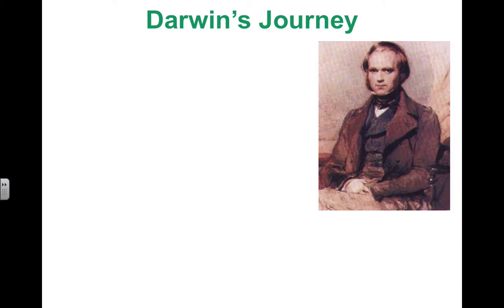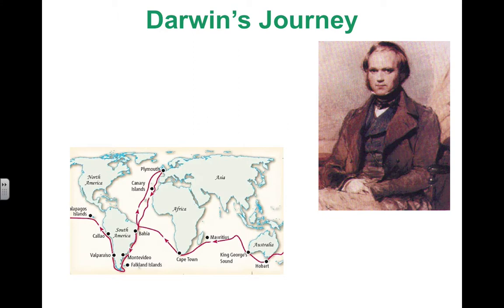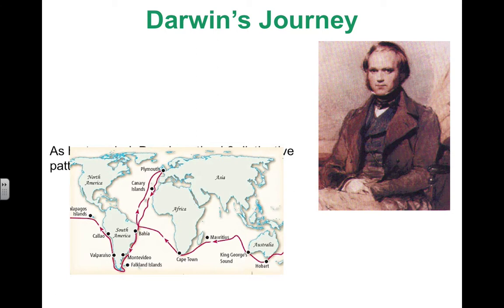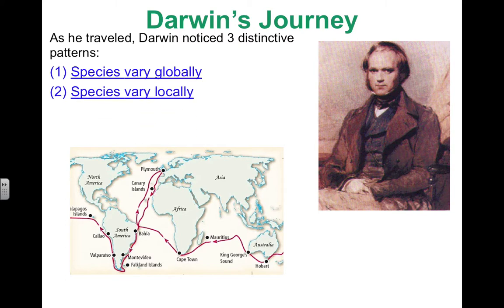One person who was interested in the differences between organisms was Charles Darwin. He traveled the world observing and collecting organisms, and even found fossils of older organisms. The map below shows his journey — he started in England, made his way south to South America, stopping by a group of islands off the coast called the Galapagos Islands, then crossed the Atlantic Ocean to Australia and parts of Africa before returning home. He noticed three patterns: organisms vary globally and locally, meaning there are differences between organisms around the world but also within a certain location, and also that species change over time.